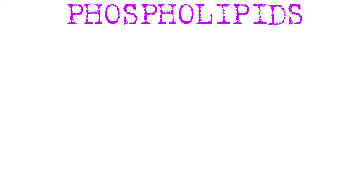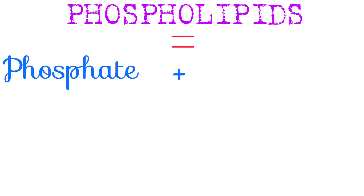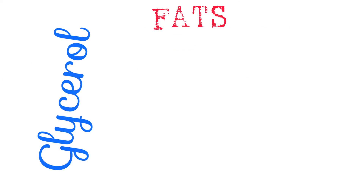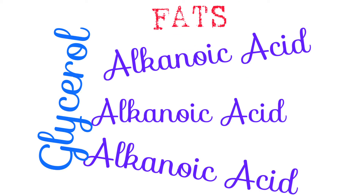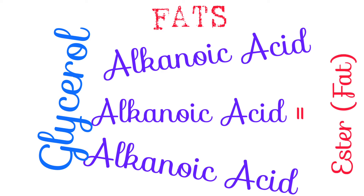Phospholipids, from the name, are made of a phosphate group and a lipid group. And if we look at fats, a glycerol molecule attaches to three molecules of an alkanoic acid on its OH sites, forming an ester, which in this case is fat.